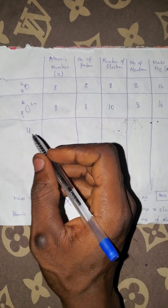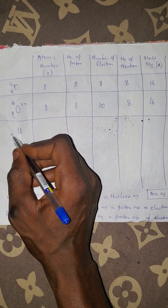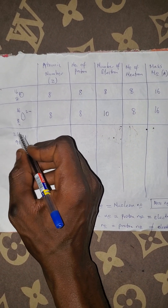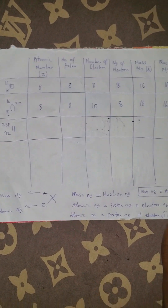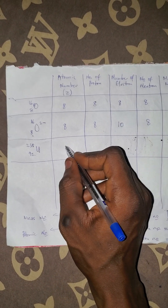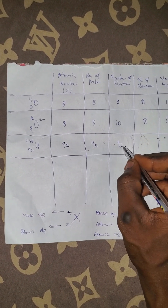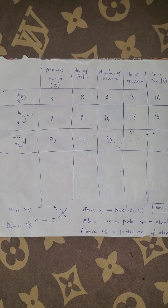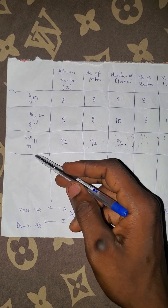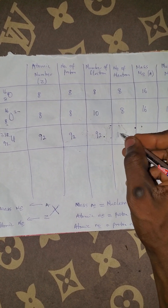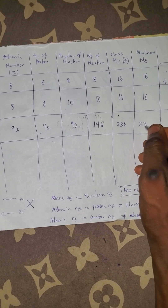Let's look at uranium: U-238, with atomic number 92 and mass number 238. The atomic number is 92, the proton number is also 92. The electron number is also 92 because uranium here does not possess any charge, so all three are equal. The neutron number equals mass number minus atomic number: 238 minus 92, which gives us 146. The mass number and nuclear number are both 238.